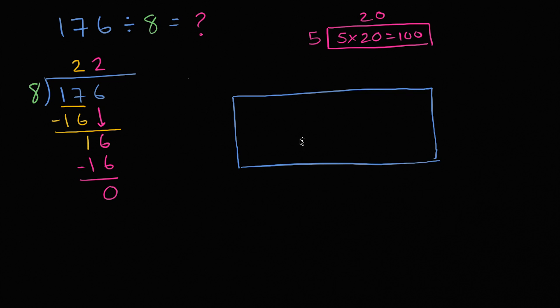So this problem is essentially saying, if I have something with an area of 176, and I know one of the dimensions is 8, this boils down to, well, how can I figure out what the length is, what this dimension up here is going to be? And if we did that, then we know what 176 divided by 8 is, because 8 times this thing is going to be 176.